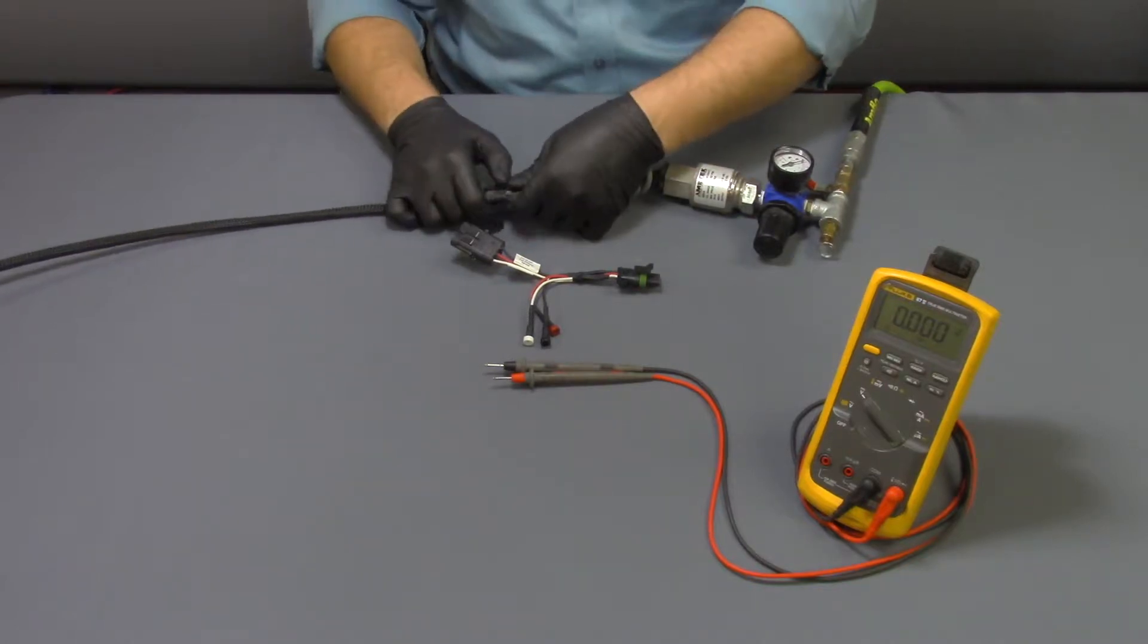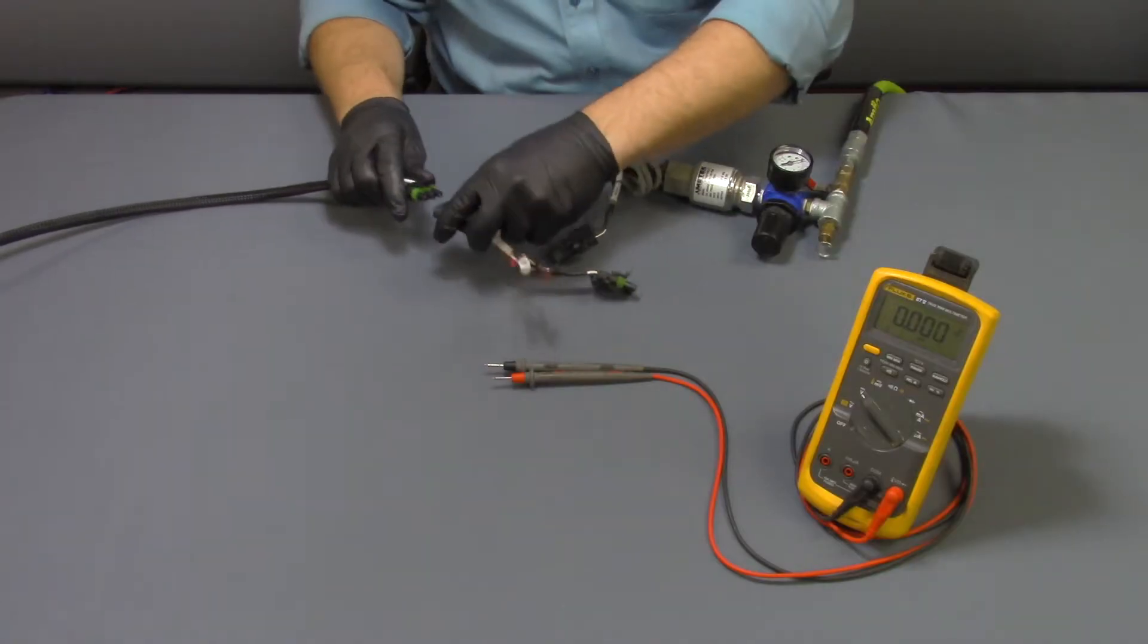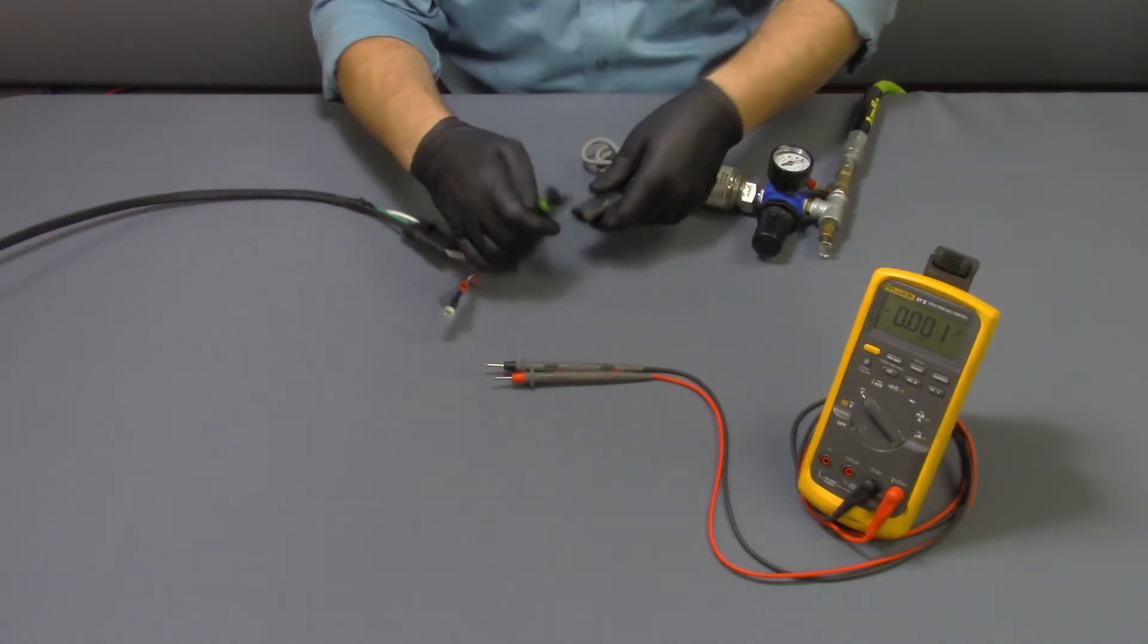Now first we unplug the system pressure sensor and plug in this breakout harness.